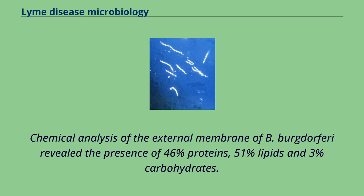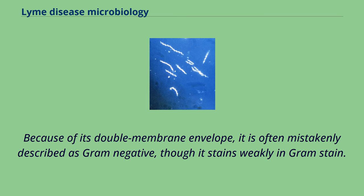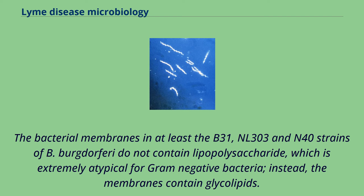Chemical analysis of the external membrane of B. burgdorferi revealed the presence of 46% proteins, 51% lipids, and 3% carbohydrates. B. burgdorferi is a highly specialized, motile, two-membrane, flat-waved spirochete, ranging from about 9 to 32 μm in length. Because of its double membrane envelope, it is often mistakenly described as gram-negative, though it stains weakly in gram-stain. The bacterial membranes in at least the B31, NL303, and N40 strains of B. burgdorferi do not contain lipopolysaccharide, which is extremely atypical for gram-negative bacteria. Instead, the membranes contain glycolipids.